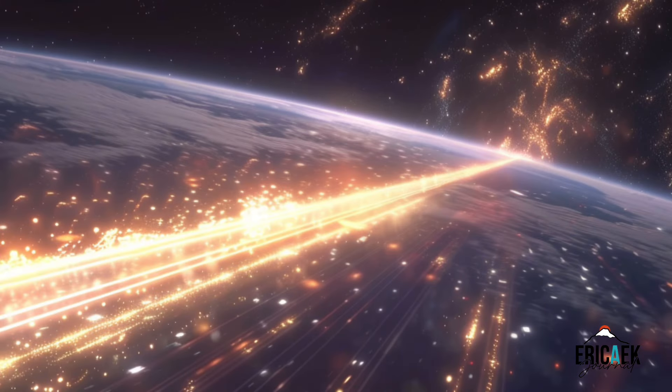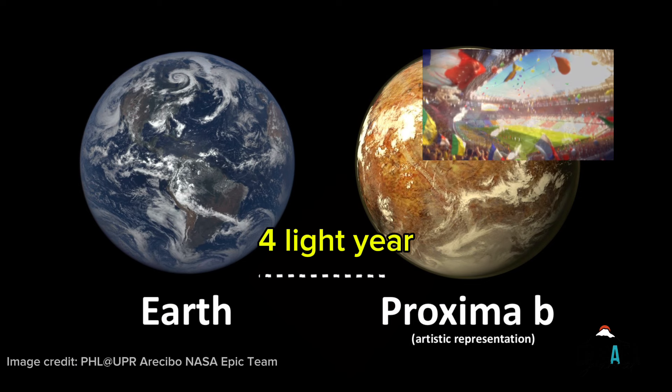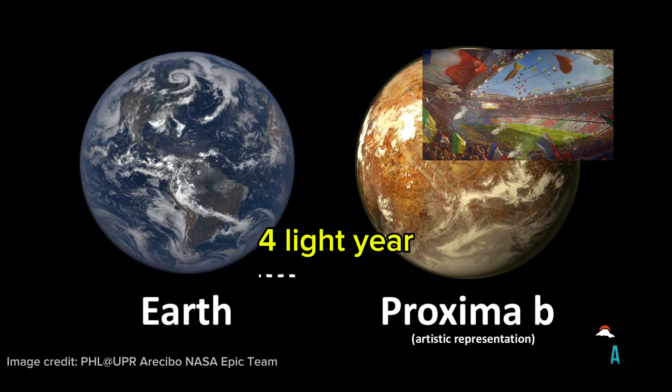To put this into perspective, one light year from Earth would place the light approximately a quarter of the way to Proxima Centauri, the closest star to our solar system, which is about 4.24 light years away from Earth. So, in one year, light from Earth has traveled a significant distance towards our nearest stellar neighbor.